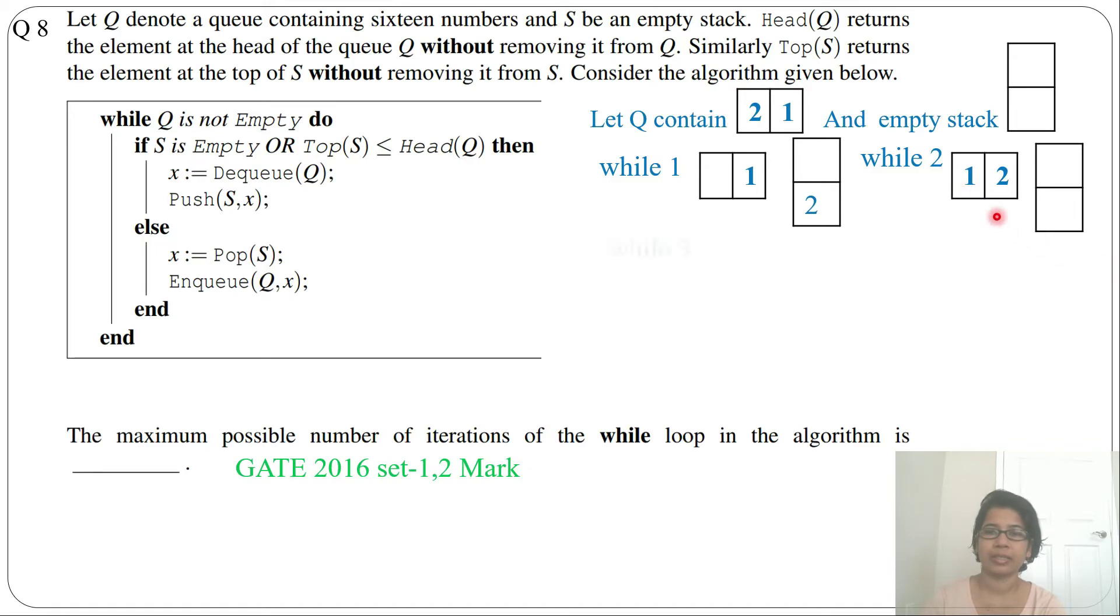So next is while 3. So now stack and queue contain this. So while stack is empty? Yes, this condition satisfies. So X equals dequeue(Q), so we'll dequeue, means we'll just delete 1. Dequeue is always at front and push 1 in the stack. So now this will be the queue and stack.